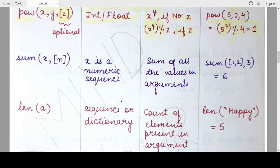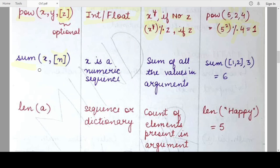There are many more functions in the Python standard library; I am giving you a summary of the most commonly used ones. The next is the sum() function. It requires a numeric sequence as a compulsory argument and has an optional second argument. The return value is the addition of all values in the sequence, and if the optional argument is also present, its value is added to that sum as well.